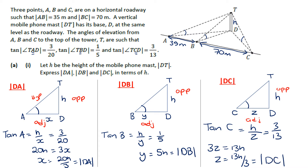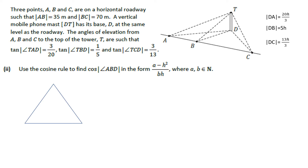We wanted each of those sides in terms of H, so having H in our answer is perfect. Part 2 asks us to use the cosine rule to find cos of angle ABD. We need to pull out triangle ADB, and the angle we want is ABD.